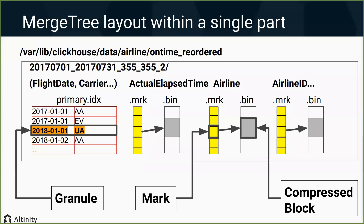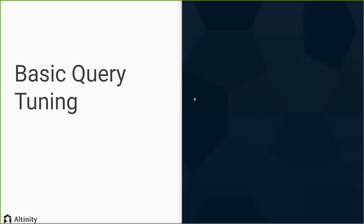So once we find a row in the primary.idx, we can use the marks to find the exact place to begin reading data. One of the cool things about ClickHouse is that the file structure is very transparent — this is the actual Linux directory name for this table, and if I go in, I can actually see the part named in a way that gives a sense of the data it contains. You can go in and see all this stuff for yourself if you're curious.